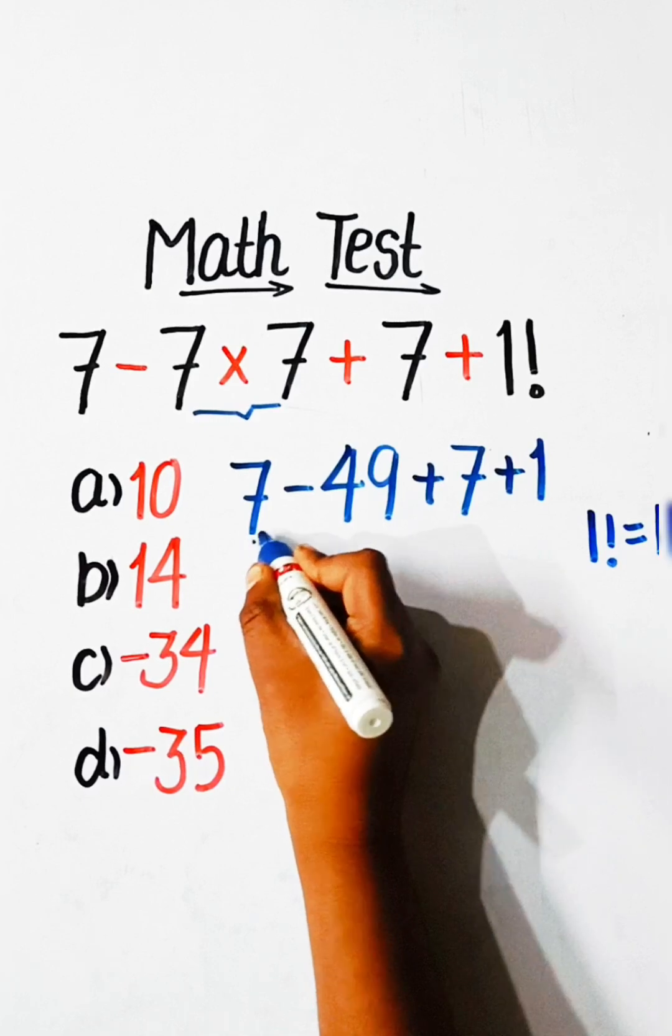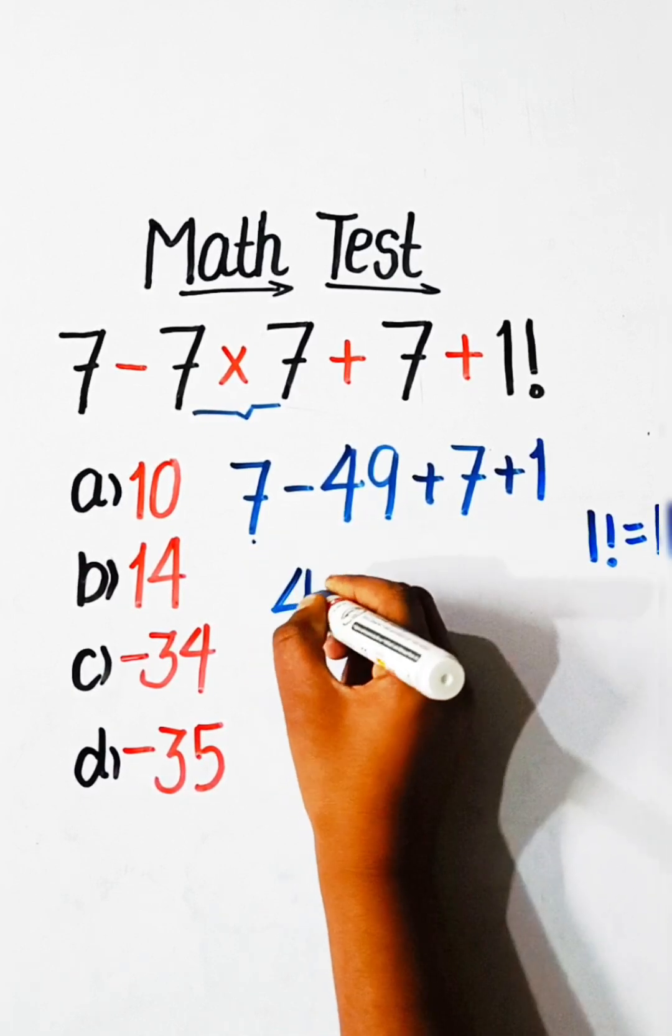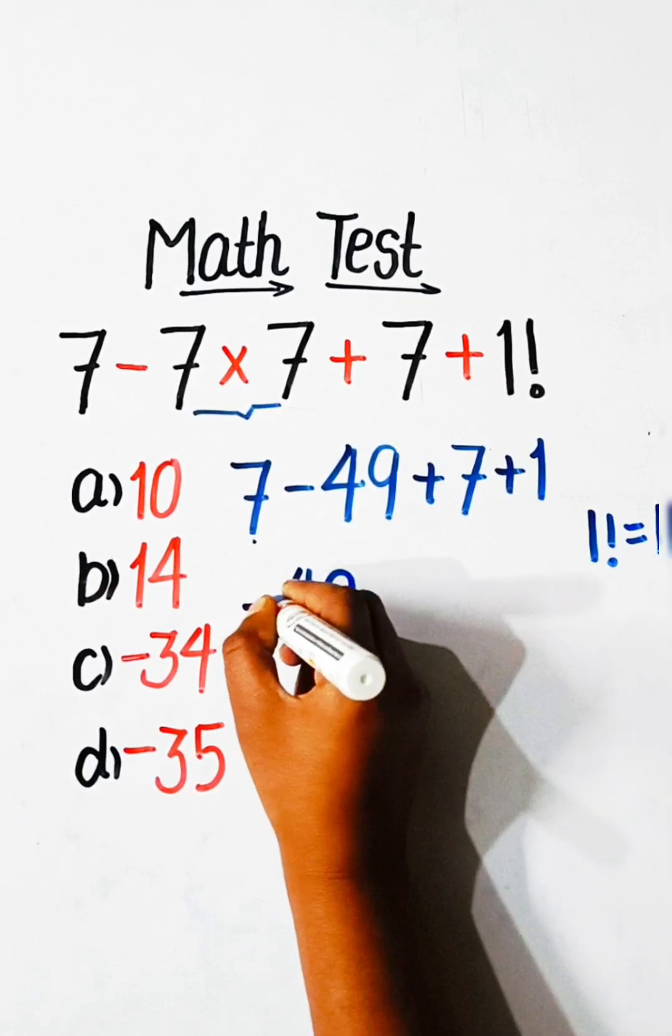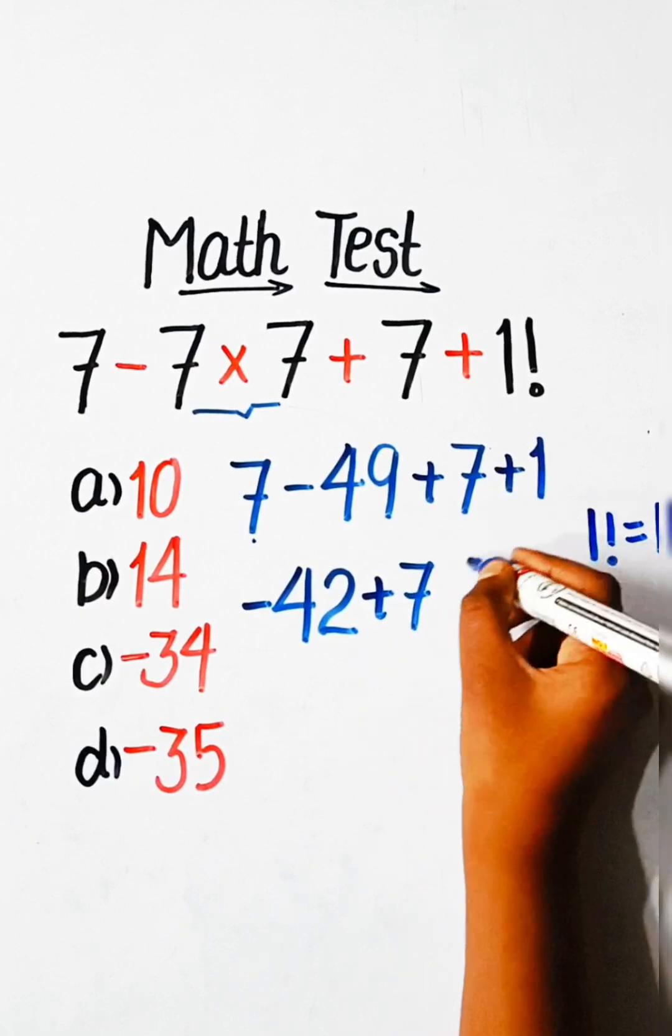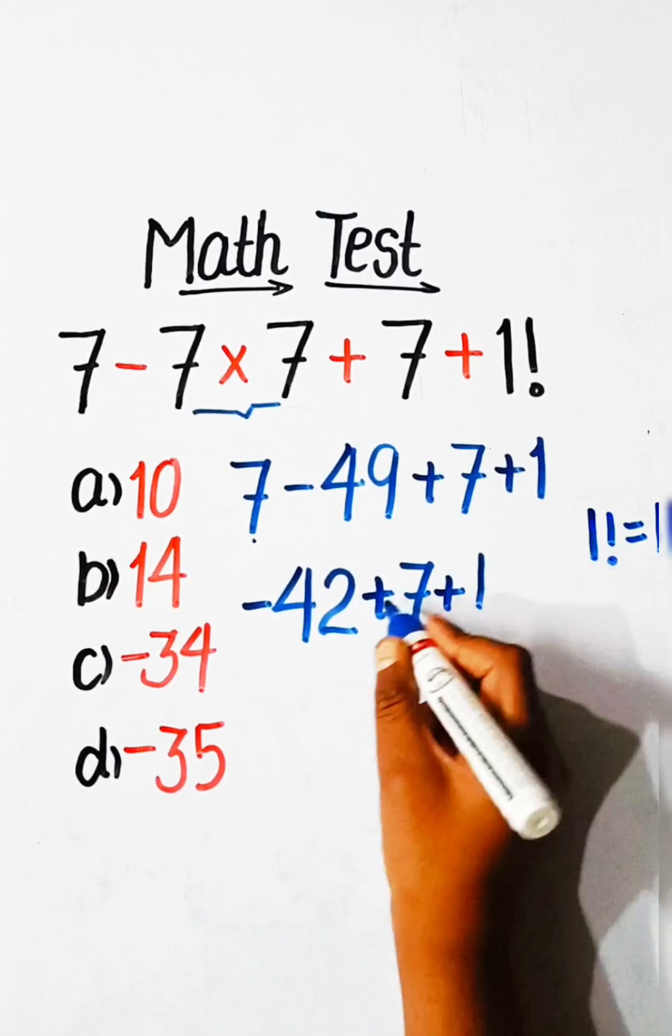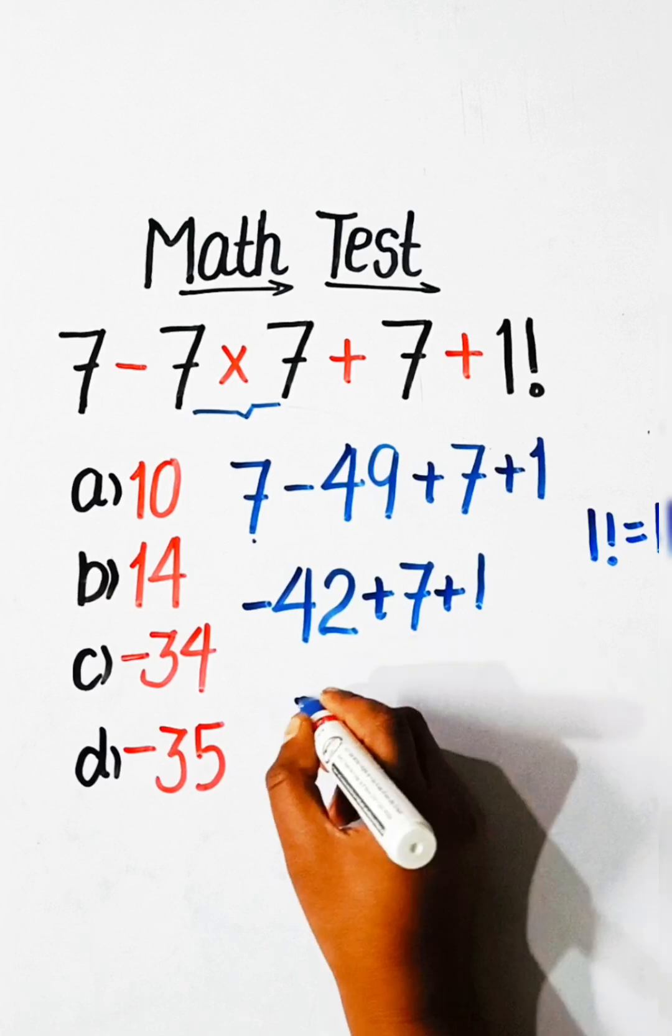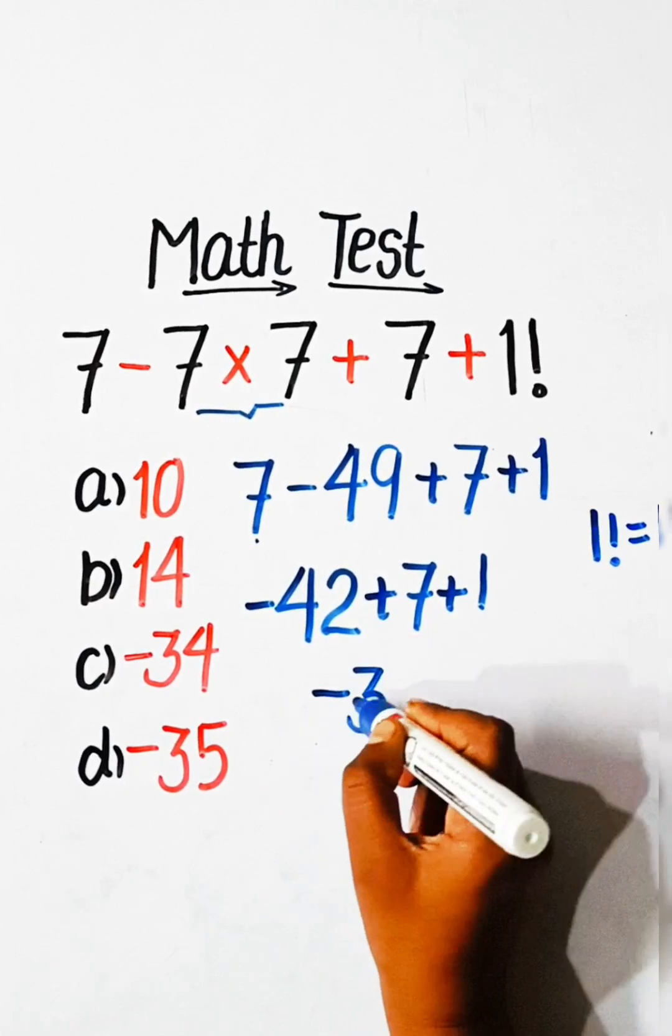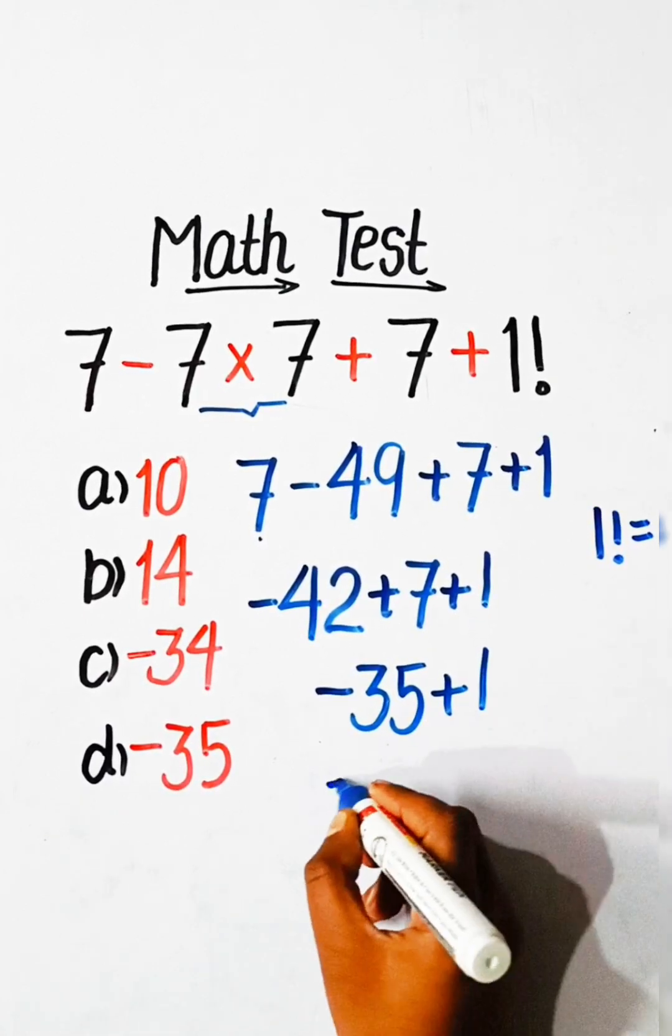So let's solve this. 7 minus 49 is minus 42. Minus 42 plus 7 plus 7 plus 1. Minus 42 plus 7 is minus 35 plus 7 is minus 28, plus 1.